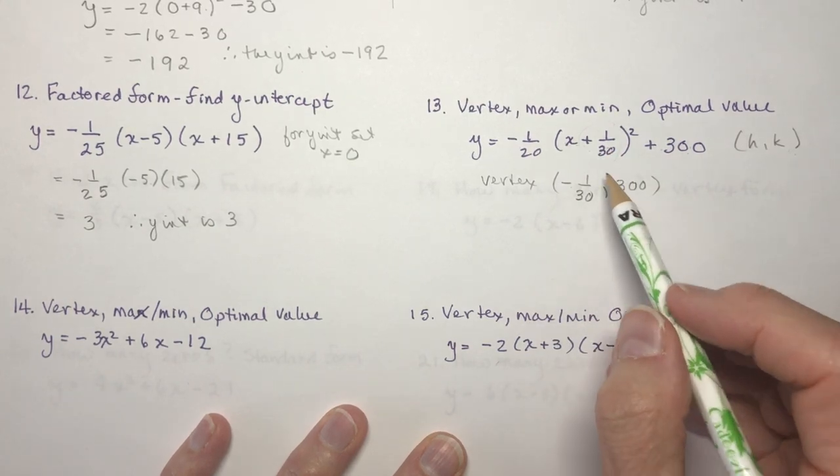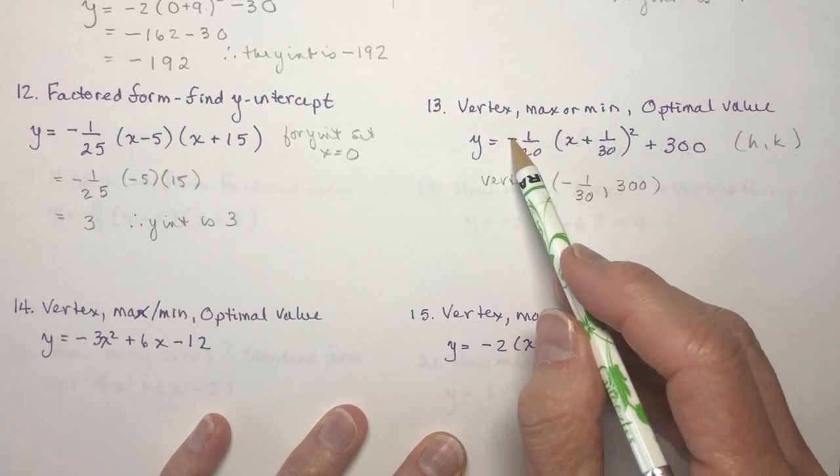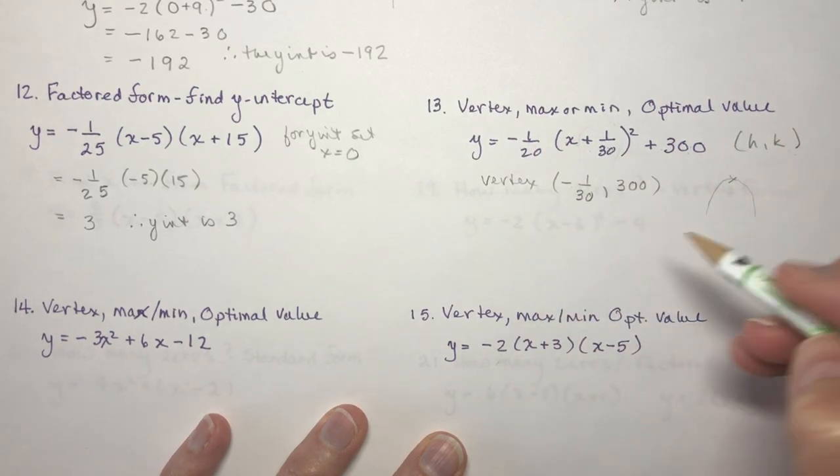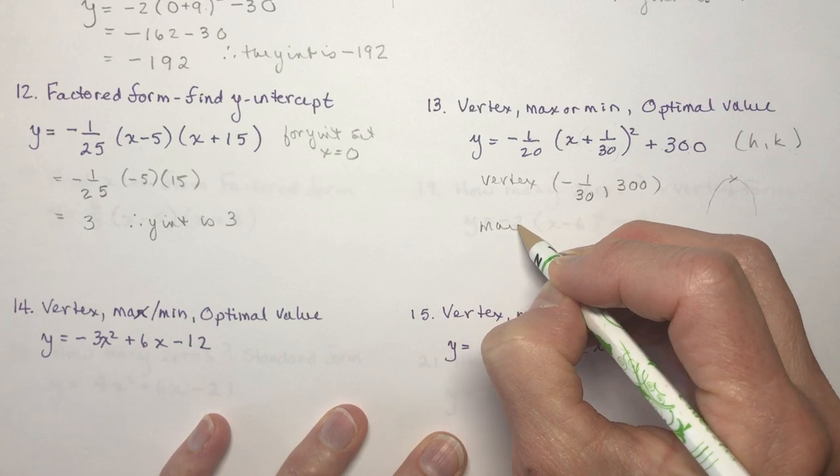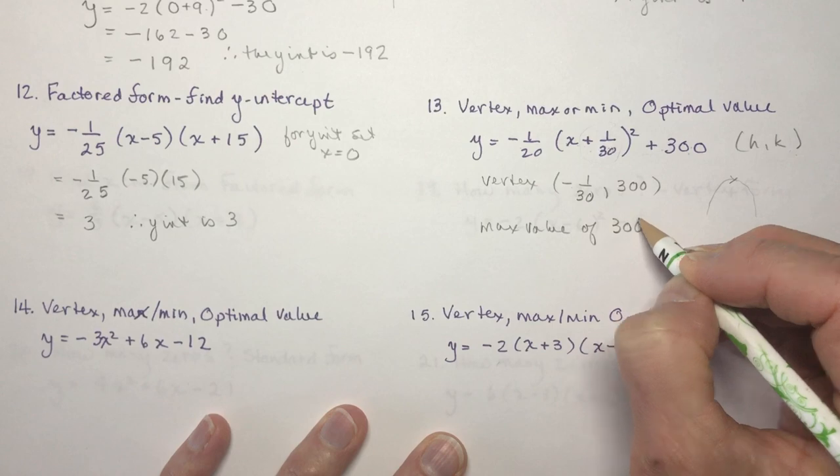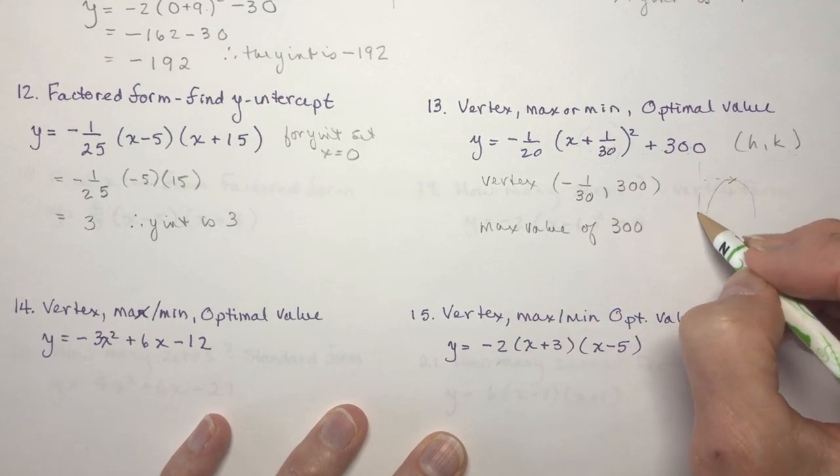So the maximum, is it a maximum or minimum? I look for my a value, I know it's concave down, so it's going to have a maximum value of 300. It's always the y value, right? How high does it go?